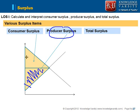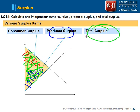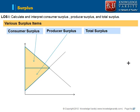If I add the consumer surplus area and producer surplus area, this total area gives me the total surplus. So these are the various surplus items that we have.